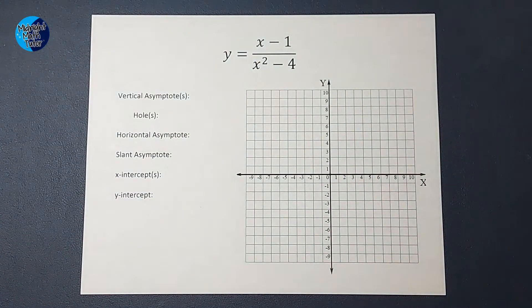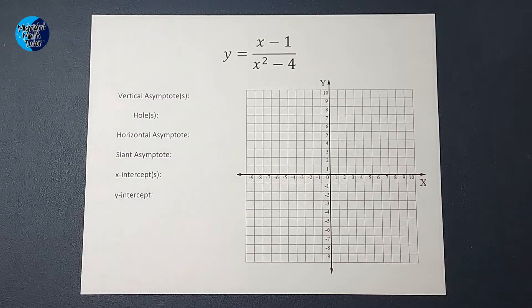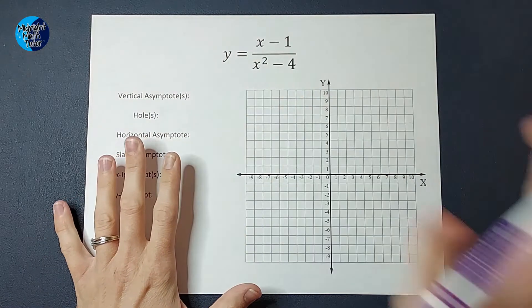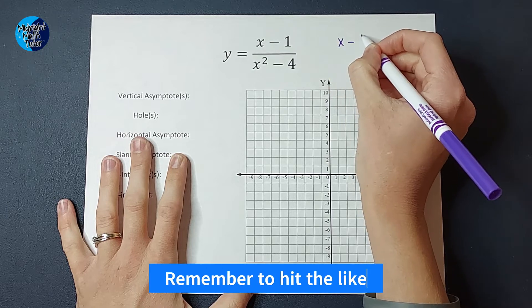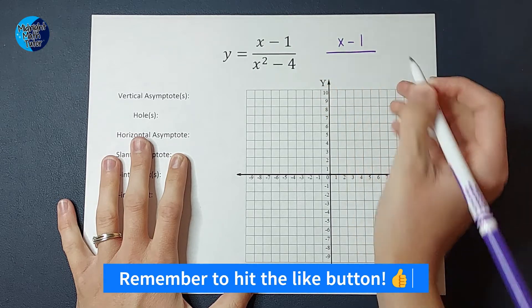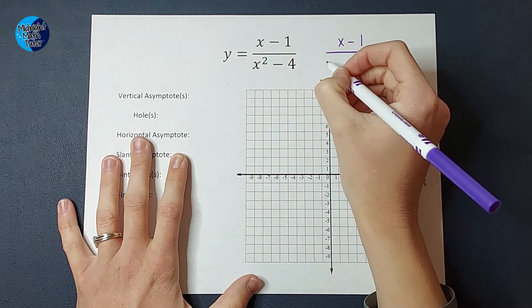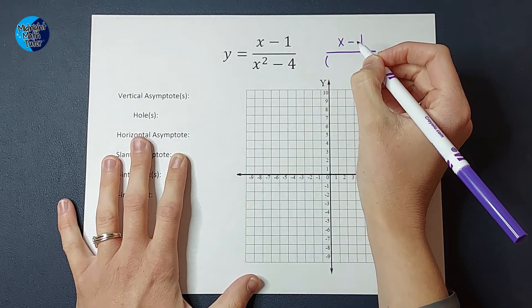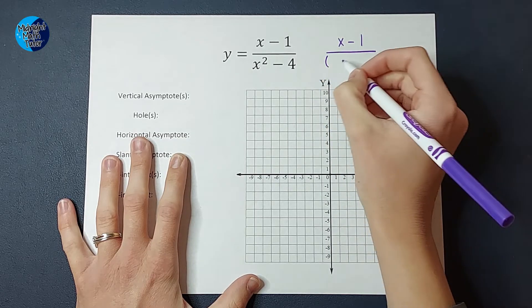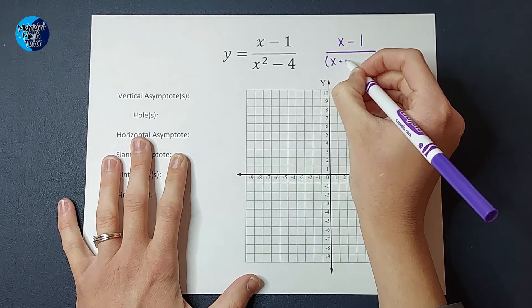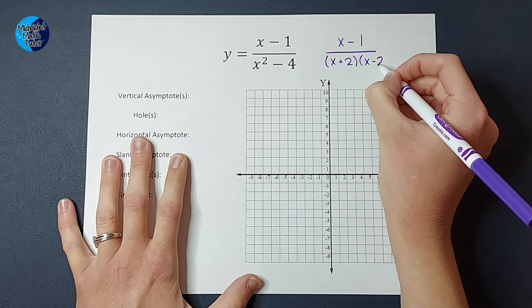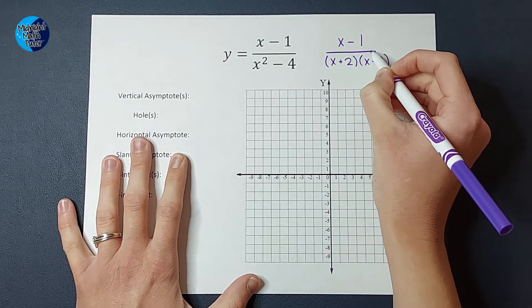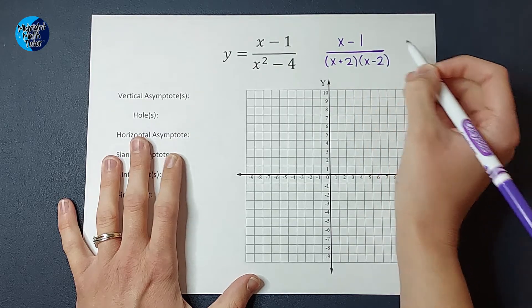All right, so first of all, we are looking... Oh, no, first, we got to factor first, right? So my numerator is factored. We've got x minus 1 on top. On bottom, if I factor that, it's a perfect square... Not a perfect square, a difference of squares, sorry. x plus 2 times x minus 2. If you need a review on how I did that quickly, I'll link a video in the corner. We're factored. Step one, done.